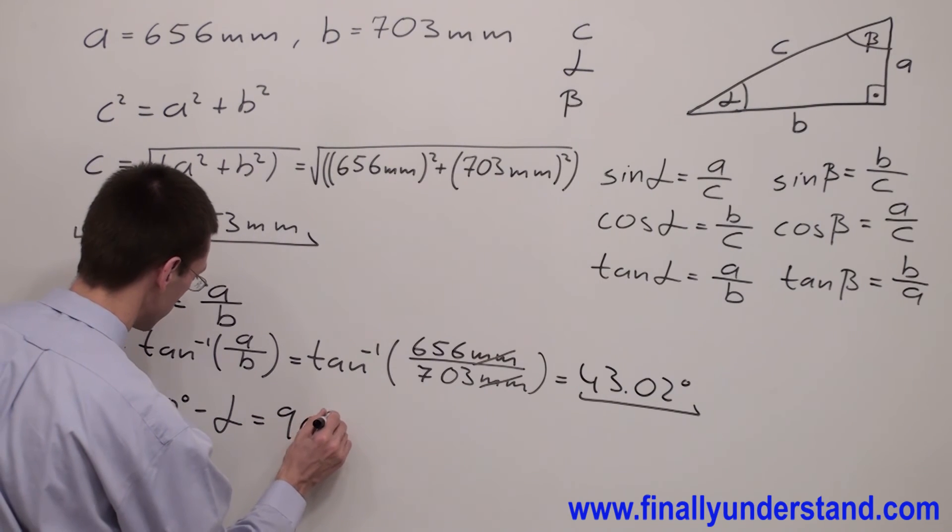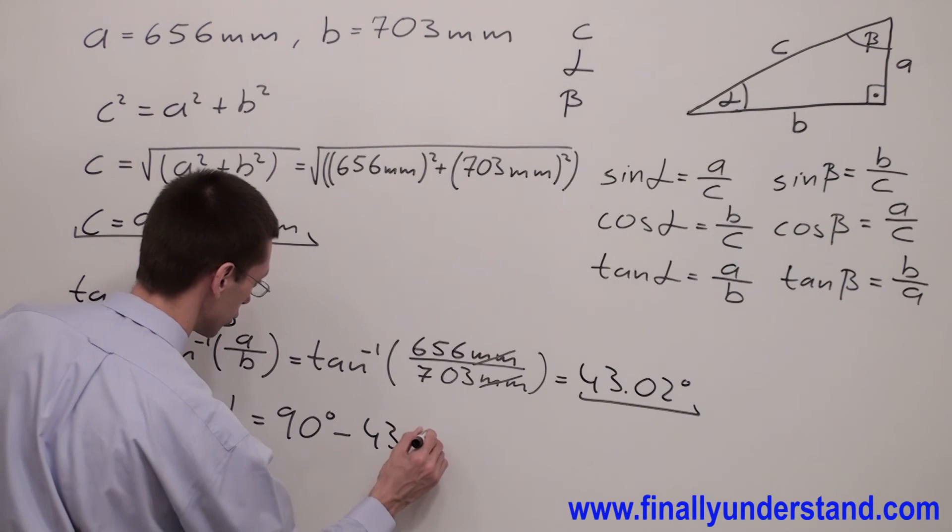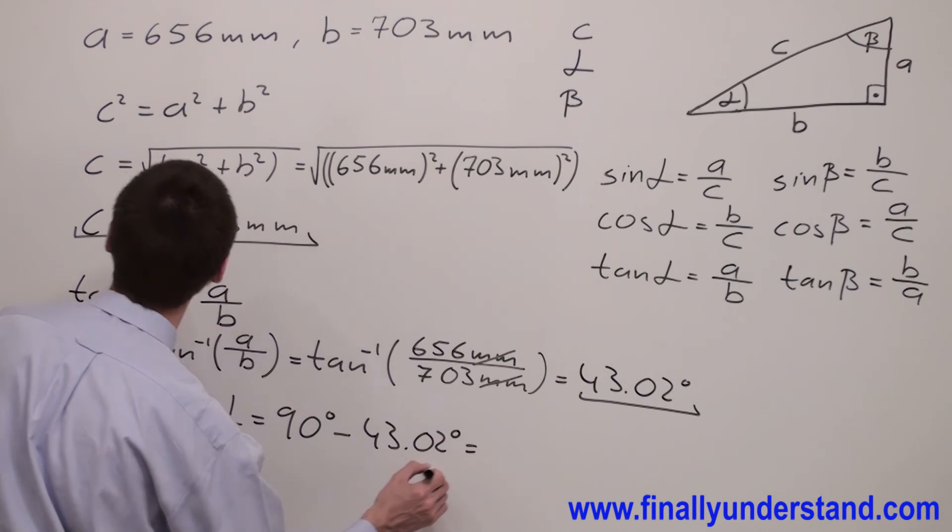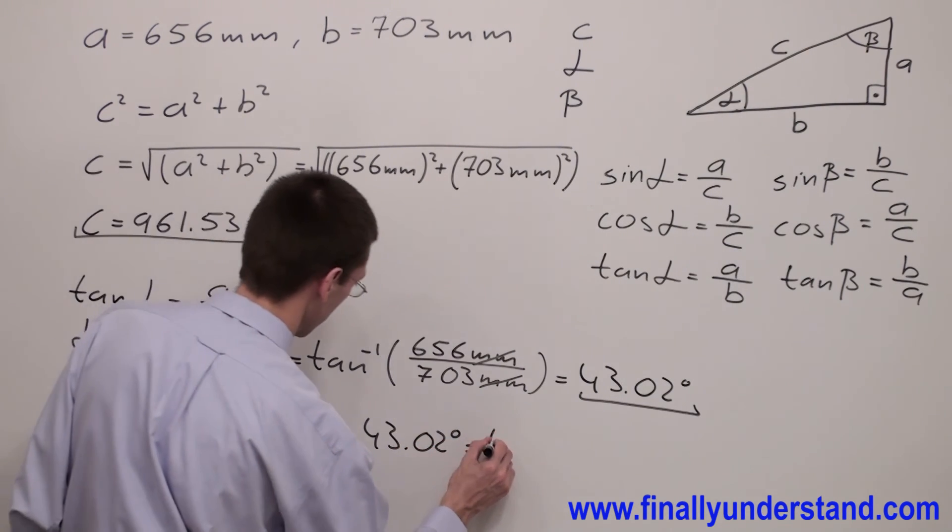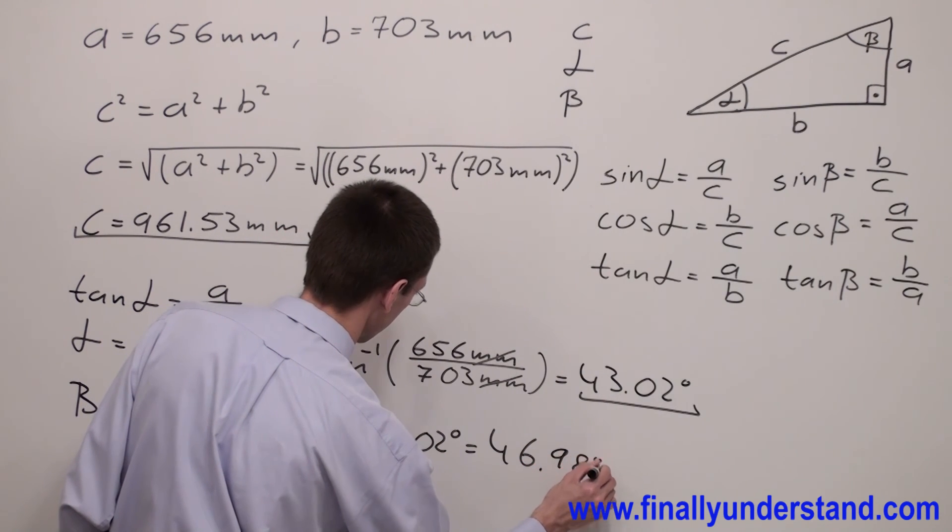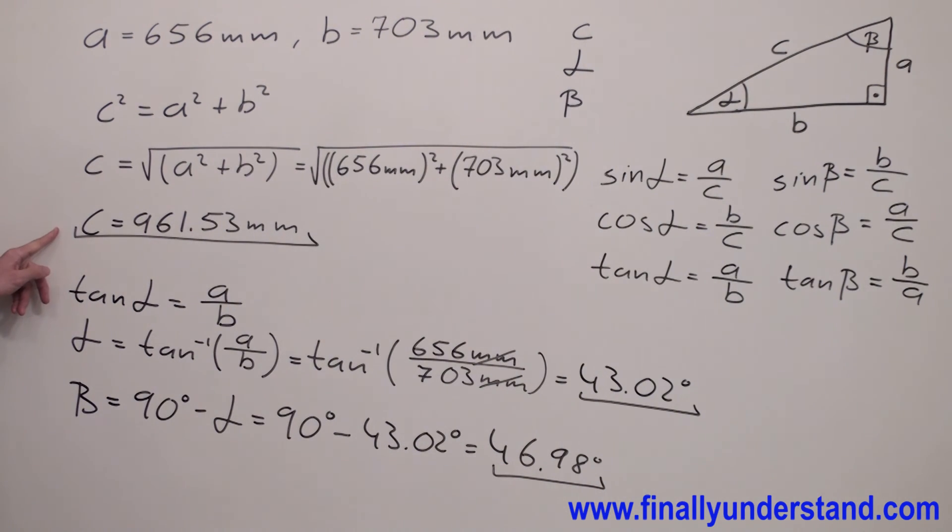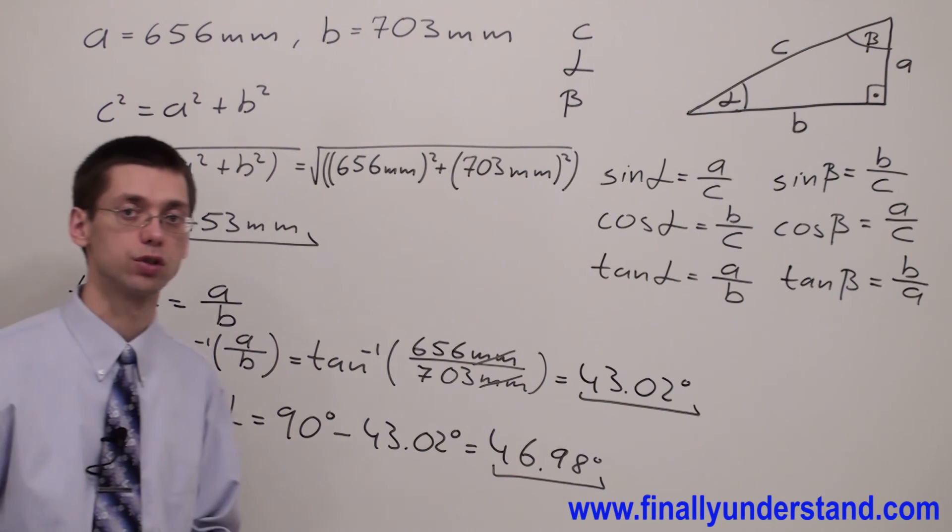...90 degrees minus 43.02 degrees, and this equals 46.98 degrees. We found the length of side c, angle alpha, and angle beta. So these are the solutions to my problem.